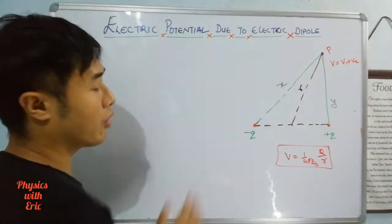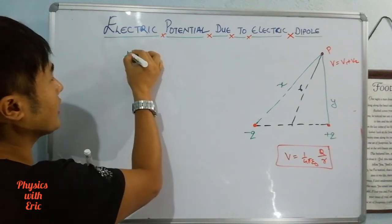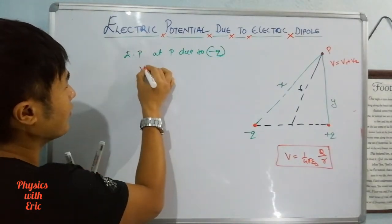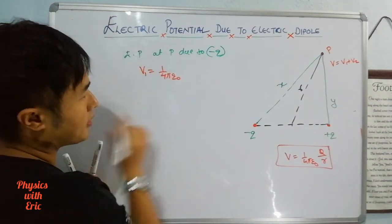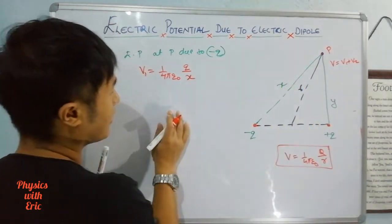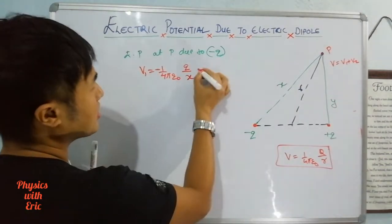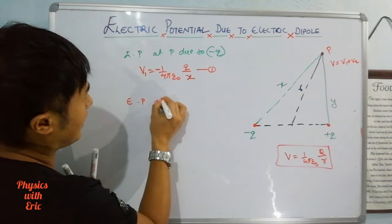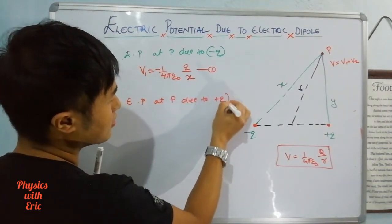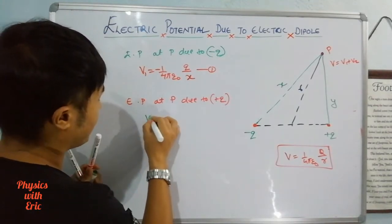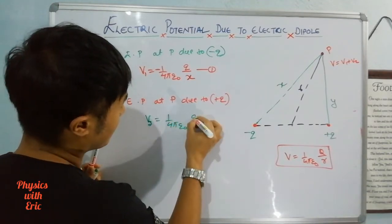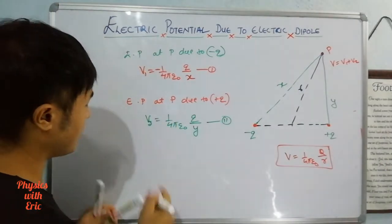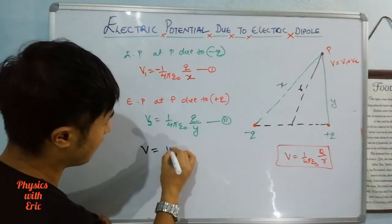Electric potential at point P due to minus Q gives us V1. Electric potential at point P due to plus Q gives us V2 equals to 1 by 4 pi epsilon naught times Q divided by distance y. This is equation 2. The total electric potential at point P equals V1 plus V2.